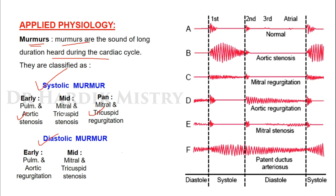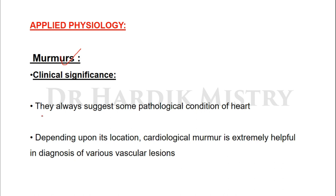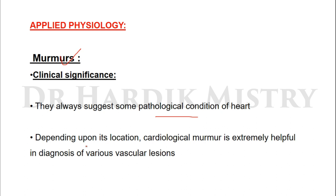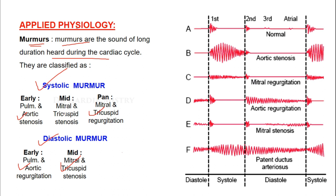Diastolic murmurs include: early diastolic murmur in pulmonary and aortic regurgitation, and mid-diastolic murmur in tricuspid and mitral stenosis. The clinical significance of murmurs: they always suggest some pathological condition of the heart, and depending upon their location, cardiac murmurs are extremely helpful in the diagnosis of various valvular lesions.